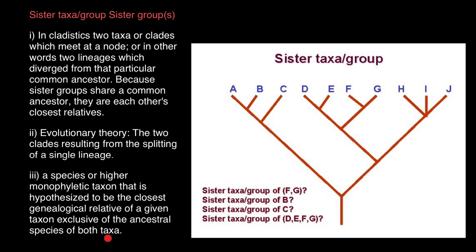Now let's work through some questions. We have to find the sister taxa group of species F and G. As you can see, F and G share a most recent common ancestor, so we can circle them in one clade. To find the sister group, we go down from this clade and find its most recent common ancestor with another clade. A clade includes a most recent common ancestor and all its descendants, so this clade is sister to that clade because they share a most recent common ancestor here.